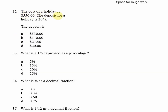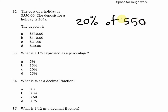Looking at question 32: the cost of a holiday is $550, and the deposit for the holiday is 20%. If we know the deposit is 20% of the cost of the holiday, we simply need to find 20% of $550. 20% is the same as 20 out of 100, and 'of' means multiplication.